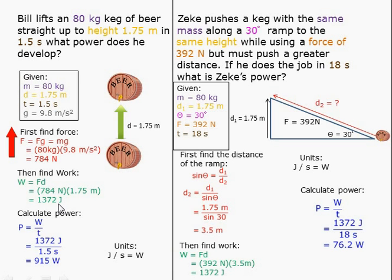The work is 1,372 joules. I can then find power, which is work over time, which is 1,372 joules over 1.5 seconds, which gives me 915 watts.